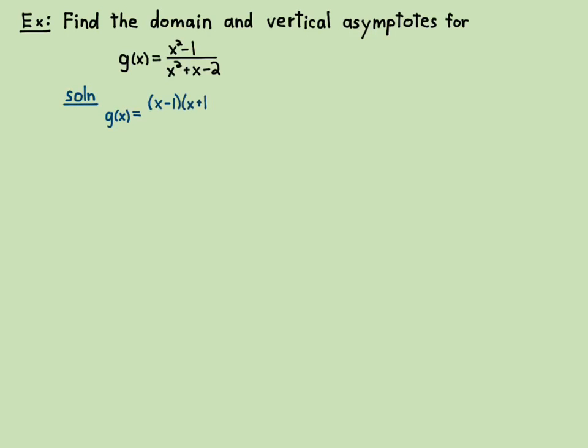So the solution, you factor the numerator and denominator. Now find the domain before you find the asymptotes.